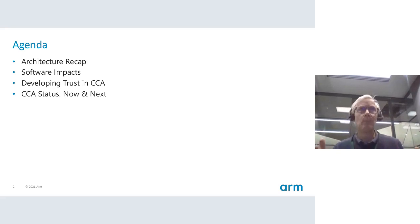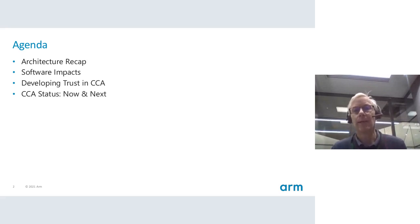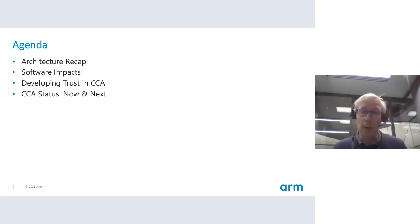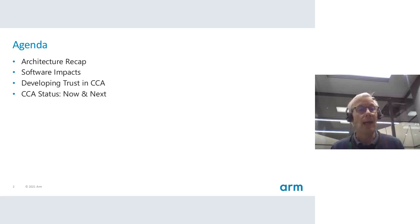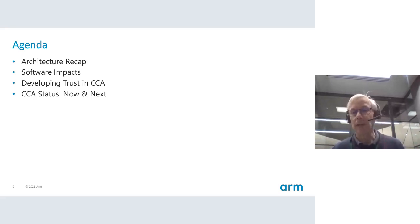What we're going to cover: we were briefed that a lot of people would have actually seen the deep dive day we did with Linaro on Confidential Compute Architecture earlier in the year. But we weren't sure if that covers everyone. So I'm going to go over the architecture, talk a little bit about software impacts, about how a relying party will develop trust in the CCA, and then a bit more about where we are with status.